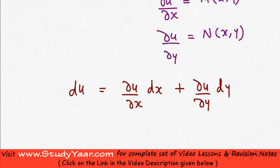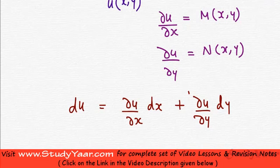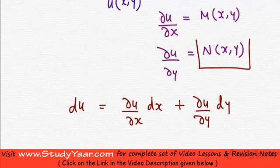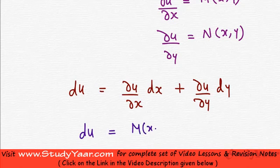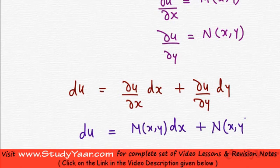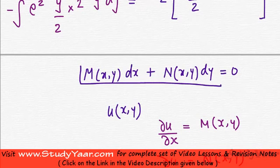Now I replace ∂u/∂x by M(x,y) and ∂u/∂y by N(x,y). So what I get is du = M(x,y)dx + N(x,y)dy, which is essentially the original equation.